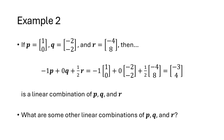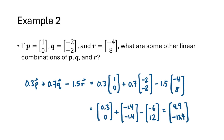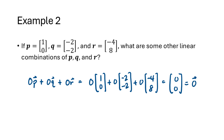Let's look at another example. Here we have three vectors p, q, and r, each with two entries. One example of a linear combination is -1p + 0q + (1/2)r, which works out to be (-3, 4). We're allowed to use decimals, positives and negatives — any real numbers as scalars. For instance, 0.3p + 0.7q - 1.5r works out to be (4.9, -13.4). And again, choosing 0 for each weight gives the zero vector.